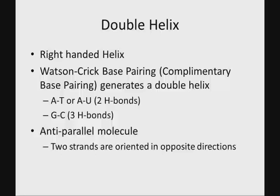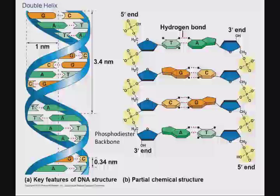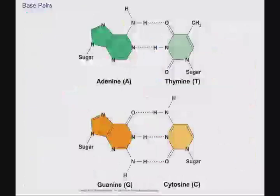DNA is an anti-parallel molecule, meaning the two strands run in opposite directions. In the partial chemical structure shown here, the strand on the left starts with the 5' end at the top and the 3' end at the bottom, while the opposite strand has the 3' end at the top and the 5' end at the bottom. This directionality is also important because DNA is read 5' to 3' — just like in English we read left to right. The directionality must be understood to follow information flow from DNA to RNA to protein; otherwise, you'd read things the wrong way and get gibberish.